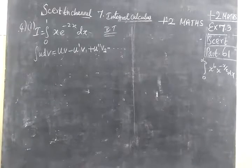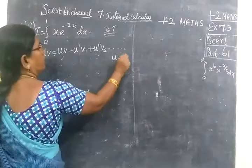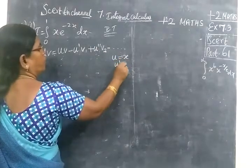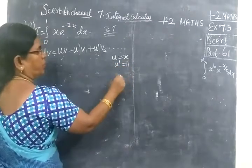Now let u equal to x, so u dash equal to 1. U double dash is not needed because it becomes 0.